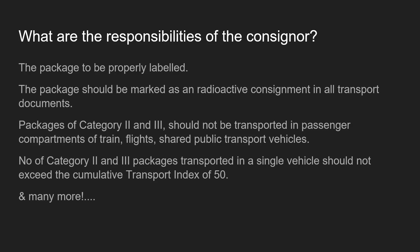Further consignor responsibilities: the package must be properly labeled, and all documents must clearly state that it is a radioactive consignment. Packages of Category II and III should not be transported in passenger compartments of trains, flights, or shared public transport vehicles. The number of Category II and III packages in a single vehicle should not exceed a cumulative transport index of 50 — if more, multiple vehicles are required.